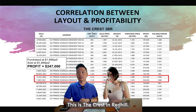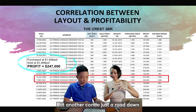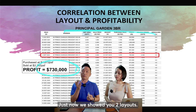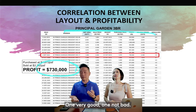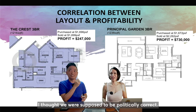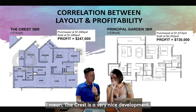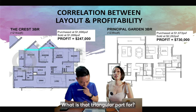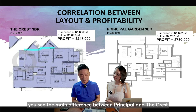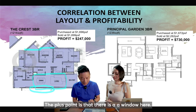Another comparison: The Crest in Redhill made $247,000 profit, while Principal Garden nearby made $730,000 — on three-bedroom units. The Crest has an odd-shaped, long Y-shaped living room with some triangular areas — not ideal. Principal Garden has a square living room with a wide window panel, making the house look brighter and bigger. The main difference is also the square-shaped living room design versus the long corridor-like living room.